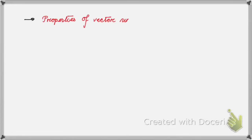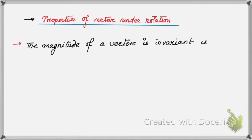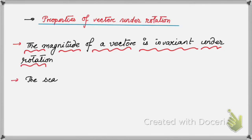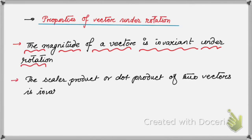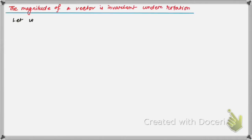Properties of vectors under rotation: First property — the magnitude of a vector is invariant under rotation. The next property is the scalar product or dot product of two vectors is also invariant under rotation. Now let's show the first property — that the magnitude of a vector is invariant under rotation.